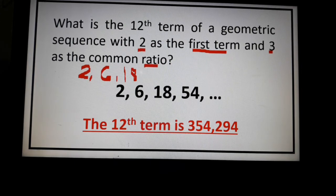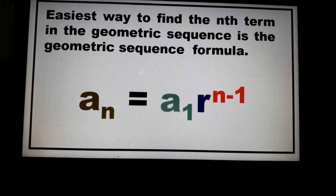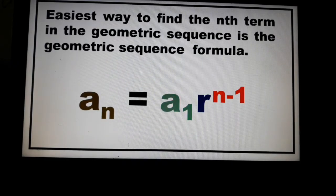So is this the best way of solving for the 12th term of a geometric sequence? You're doing it manually, pen and paper, or calculator. It will take time. So it would be best for you to use a formula. The easiest way to find the nth term in the geometric sequence is a_n is equal to a_1 times the common ratio raised to n minus 1.